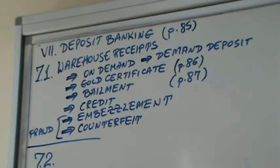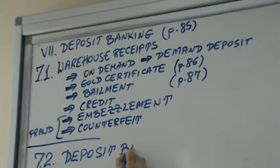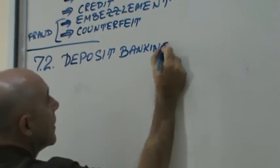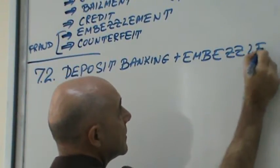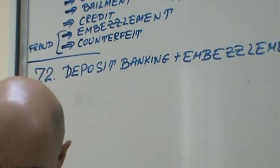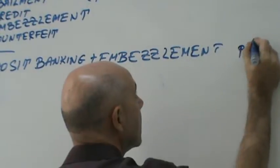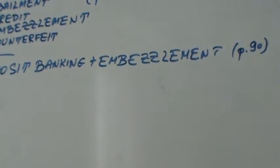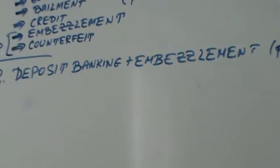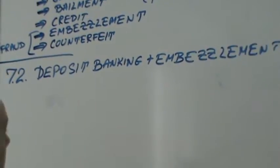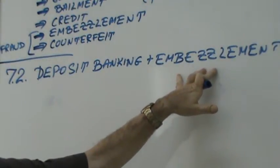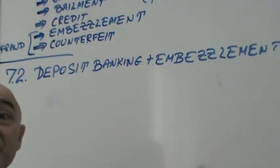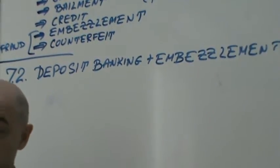Section 7.2 is Deposit Banking and Embezzlement, on page 90. When you have deposit banking, it is very tempting to do embezzlement. When you embezzle, you can profit extra on top of everything else.